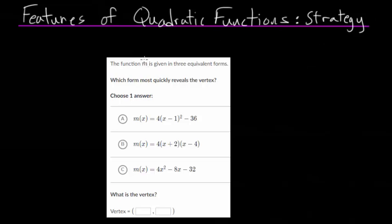In all these problems you're going to be given a function, in this case m, and it's going to be given in these three equivalent forms. This question is asking us which one of these reveals the vertex quickly. Well, that would be the first one since this is our vertex form.